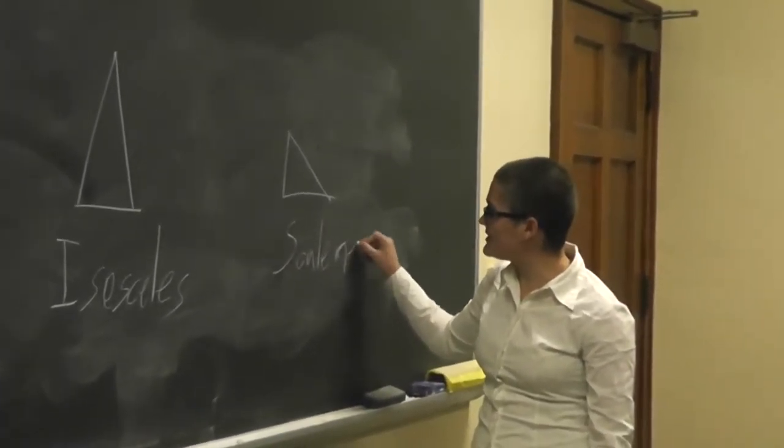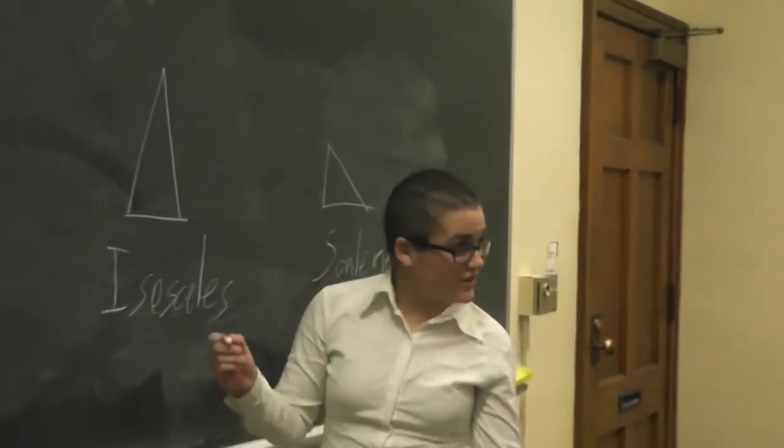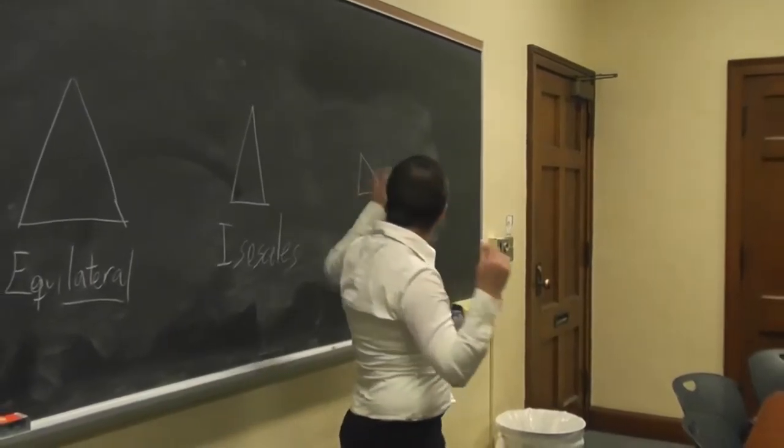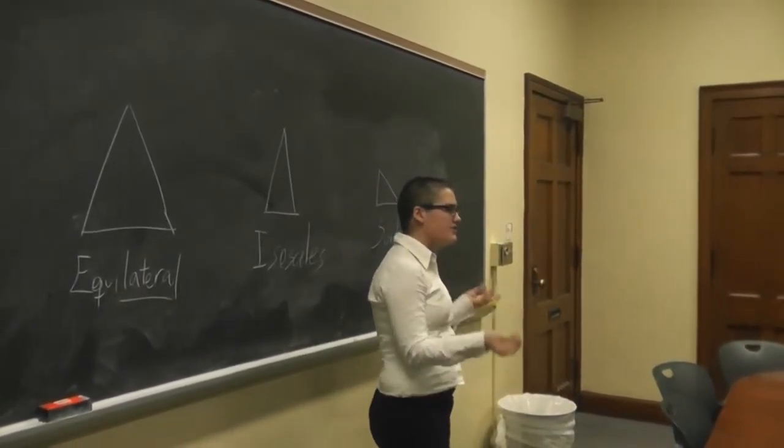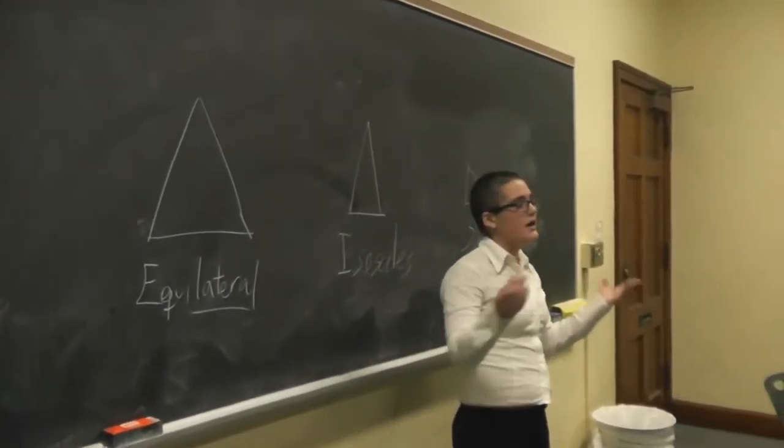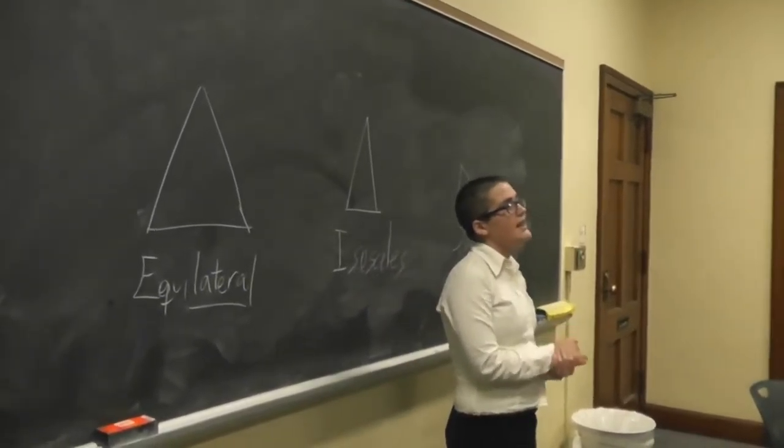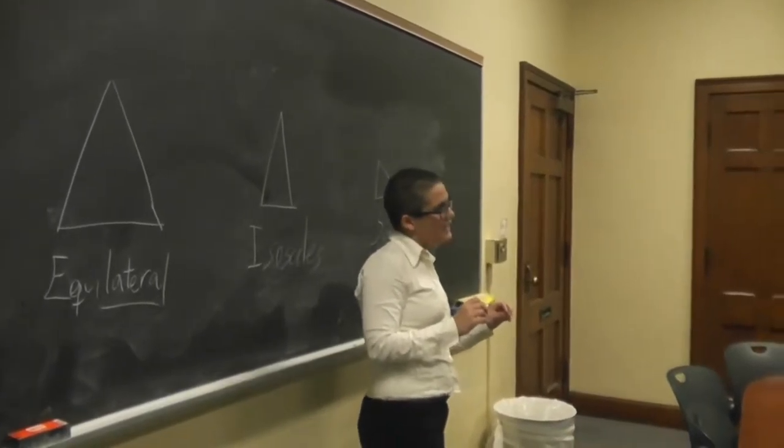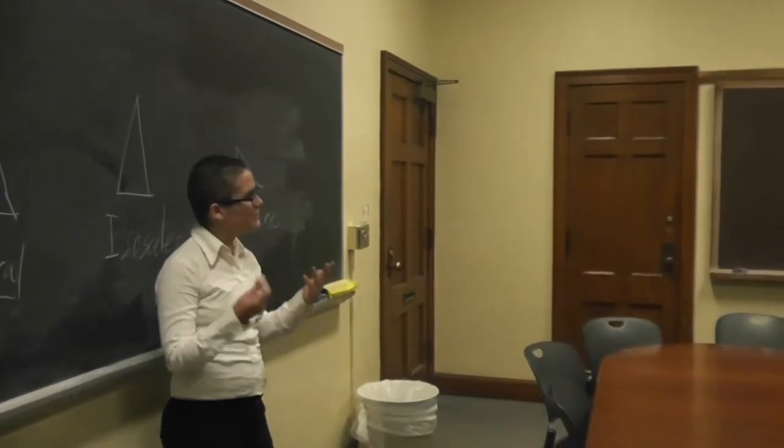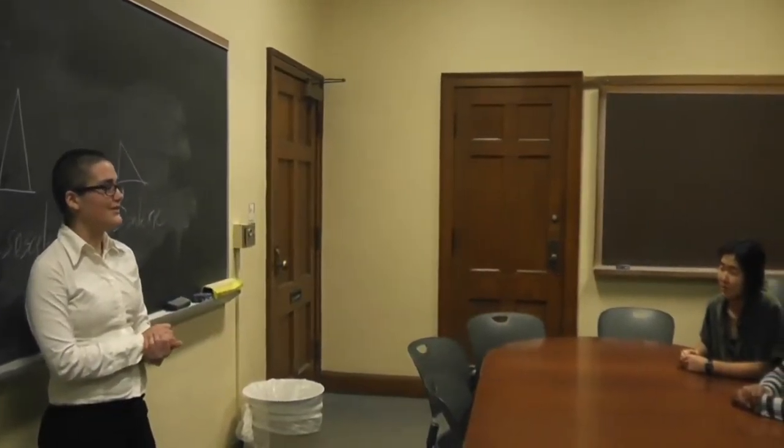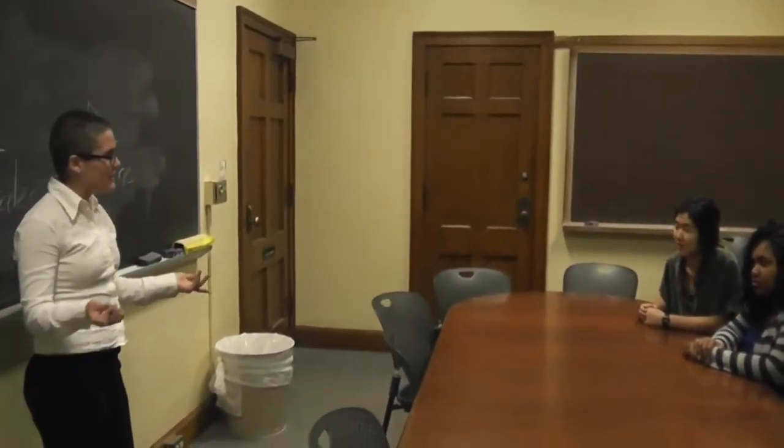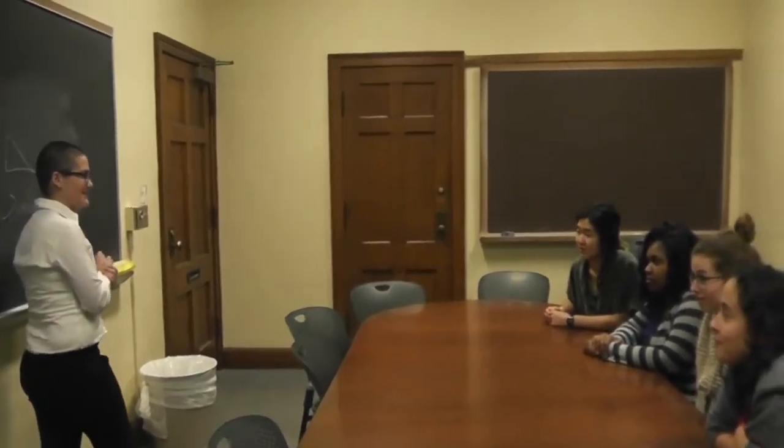Now we're going to do a quick activity called a think-pair-share. I want you to think about when you encounter a triangle in a math problem, how you can figure out what type of triangle it is. You're going to think about that for a minute, then pair up and tell each other your ideas, and then share with the whole class what you thought of. You can have a quick minute to think about it, and if you want to write it down on paper, that's also fine. Go for it.